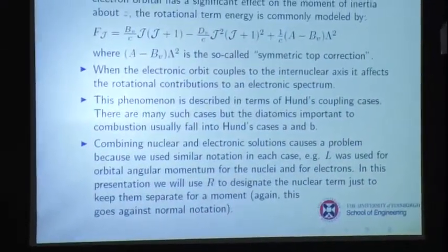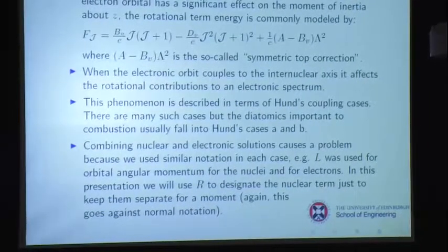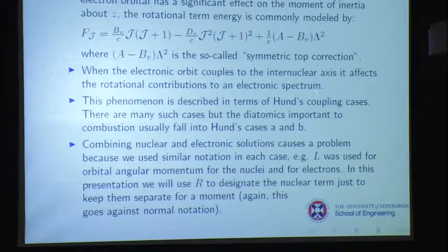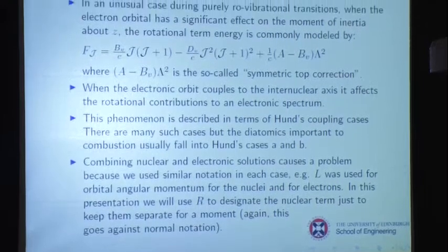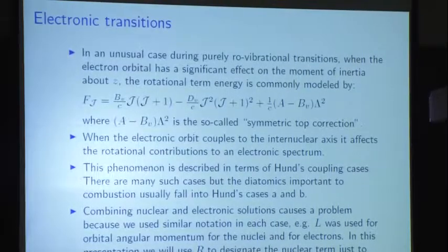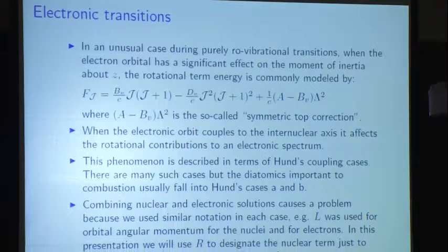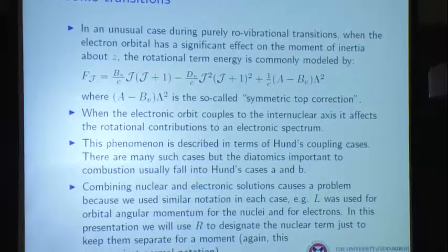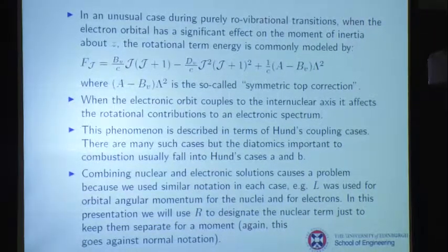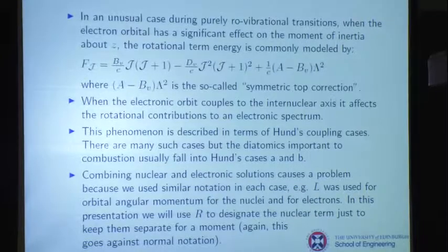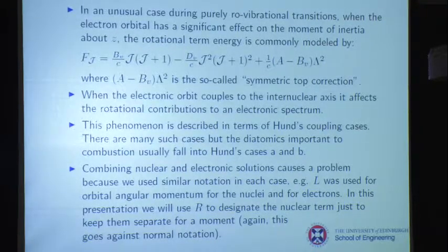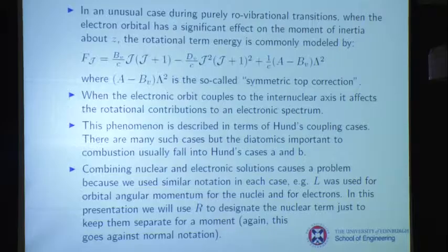The diatomics we talk about in combustion usually fall into Hund's Cases A and B, so those are the only two I'll discuss. When we try to combine nuclear and electronic, we have a problem because we've been using L for both — L for nuclear orbital angular momentum and L for electronic orbital angular momentum. I don't like it myself, but it's important to keep using the same notation other people use, because if you use different notation, readers start to wonder whether you mean something different.